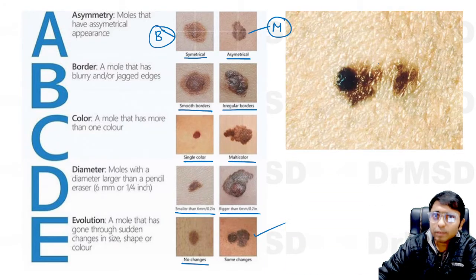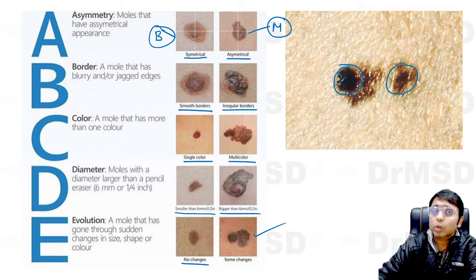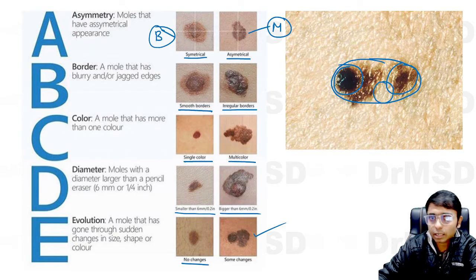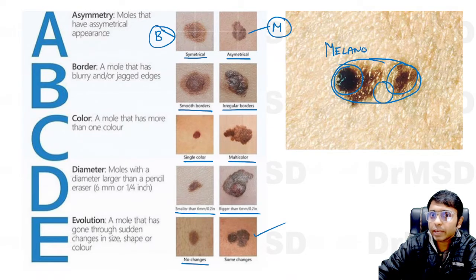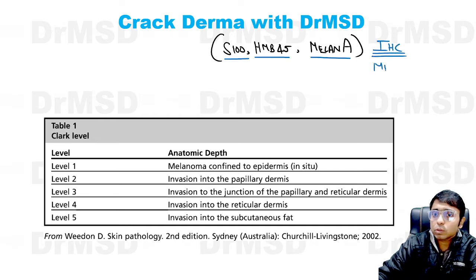You can see this mole which was of a certain size and suddenly showed an increase in size — that is evolutionary change. The color here is very dark, so C is present. D is also there — diameter more than 6 mm — and there is definite asymmetry in the lesion. In some areas the lesion is absent and in others it is completely present. This is most likely a melanoma lesion, confirmed by biopsy using immunohistochemical markers S100, HMB45, and Melan-A for melanocytes.